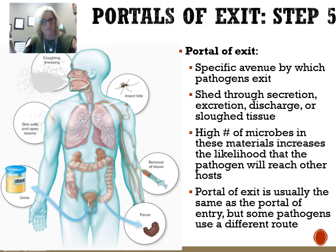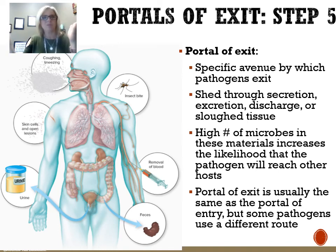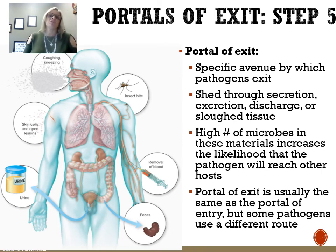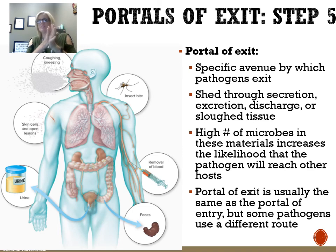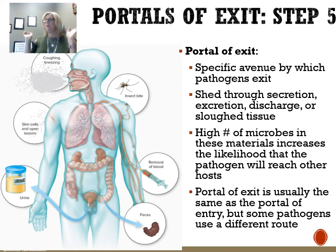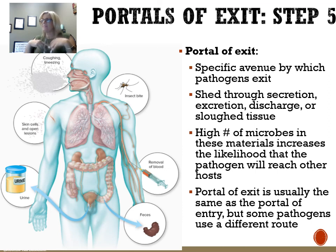Portals of exit — step five for bacteria causing infection. A portal of exit is how microbes vacate the host — usually the same way they came in, but not always. They leave via flow of fluids, sneezing, blood flow, urine, feces, coughing, skin — through sloughed off tissue, sweat, and other excretions. A microbe needs a portal of exit in order to be successful, because it has to move on to a new host. A large number of microbes in products like urine or sneezing increases the likelihood that the pathogen will move on to a new host.